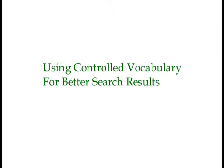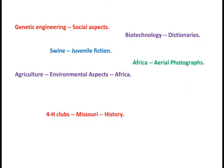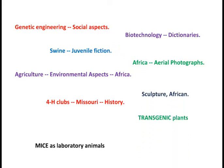Welcome to the Using Controlled Vocabulary tutorial. Controlled vocabularies, also known as subject headings, are special words or terms assigned to books in a library catalog or articles in a library database. Using these controlled vocabularies can improve your search results — sometimes making your results more relevant and focused on your topic, and sometimes bringing up more results to work with.